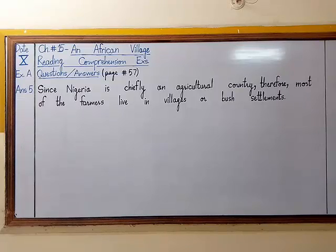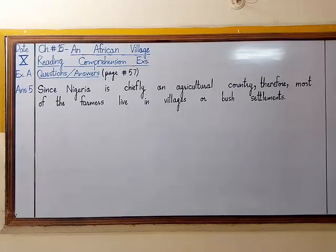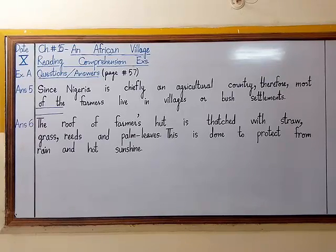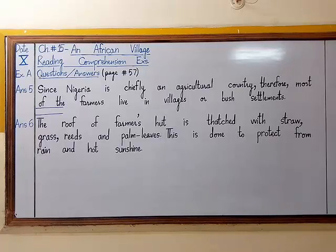Question number six is: What is the roof of a farmer's hut made of? The answer to question number six is: The roof of a farmer's hut is thatched with straw, grass, reeds, and palm leaves. This is done to protect from rain and hot sunshine.